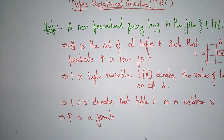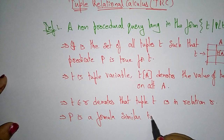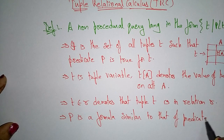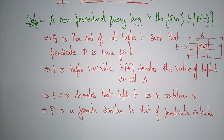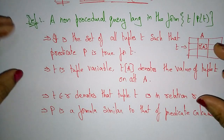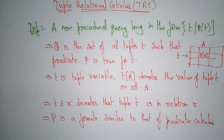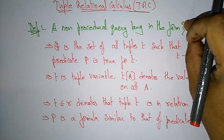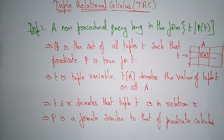P is a formula — a predicate — similar to that of predicate calculus. It is an expression that evaluates to true or false. When writing tuple relational calculus, you have to express what T is and what P(T) is.